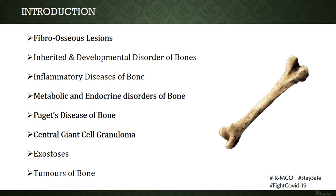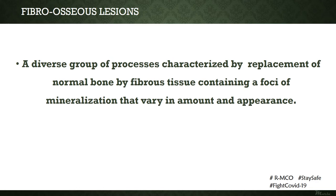We are already familiar with this slide. We have discussed the various categories of lesions affecting the bone. These lesions are: fibro-osseous lesions, inherited and developmental disorders of bone, inflammatory diseases of bone, metabolic and endocrine disorders of bone, Paget's disease of bone, central giant cell granuloma, exostoses, and other tumors of the bone.